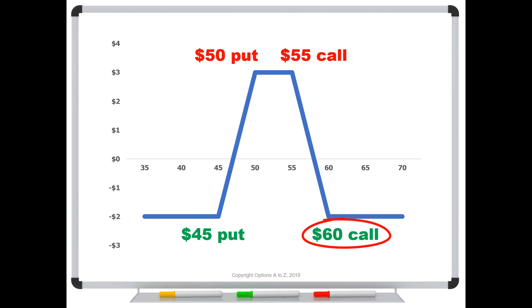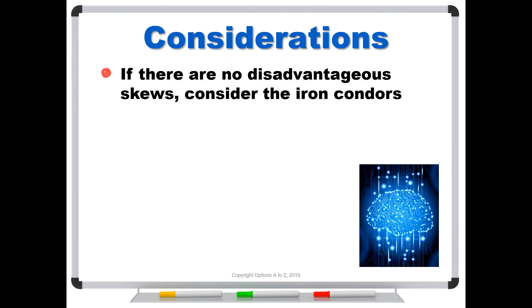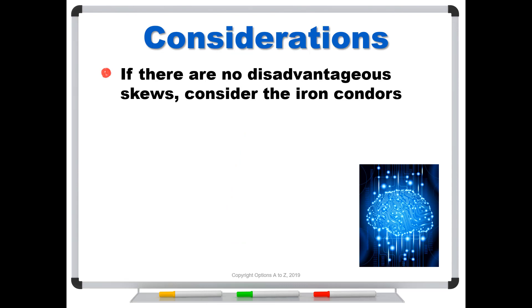If it breaks out to the downside, the stock really tanks. All I have to do is buy back that 50 put. Now I've got a bear spread on the right with the credit spread here with the 55, 60 calls. But I also have this long 45 put. So that's the reason that most professional traders will lean towards an iron condor, or in this case, a short iron condor, because it makes for easier morphs. So always remember, if there are no disadvantageous skews, consider the iron condors for those using them for premium collection. The reason we do that is it creates easier morphs in both directions.